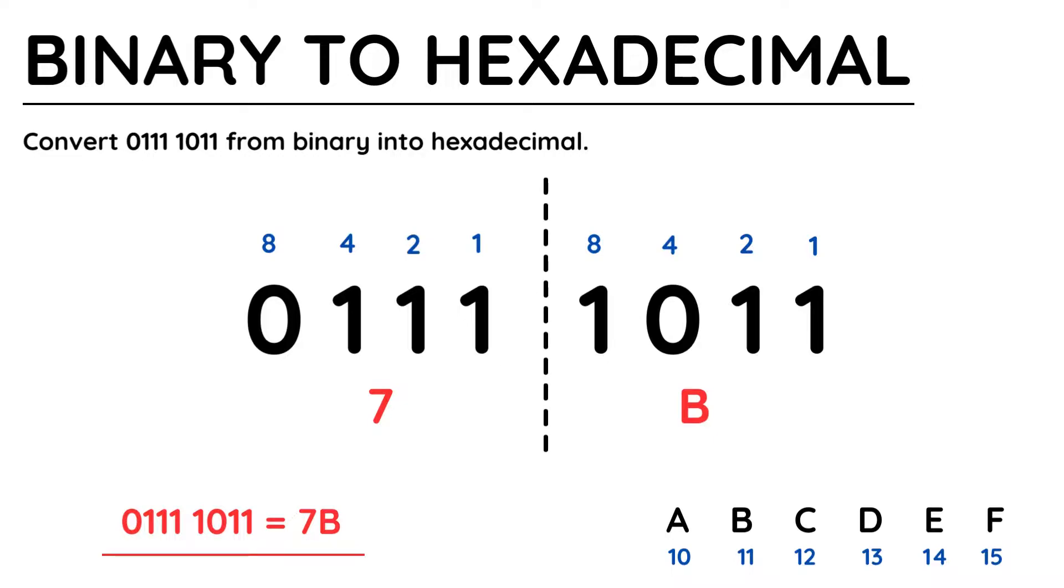01111011 in binary is equivalent to 7B in hexadecimal. It's also a good idea to neatly write out your answer next to any working out you have done, so the examiner can clearly see your final result.